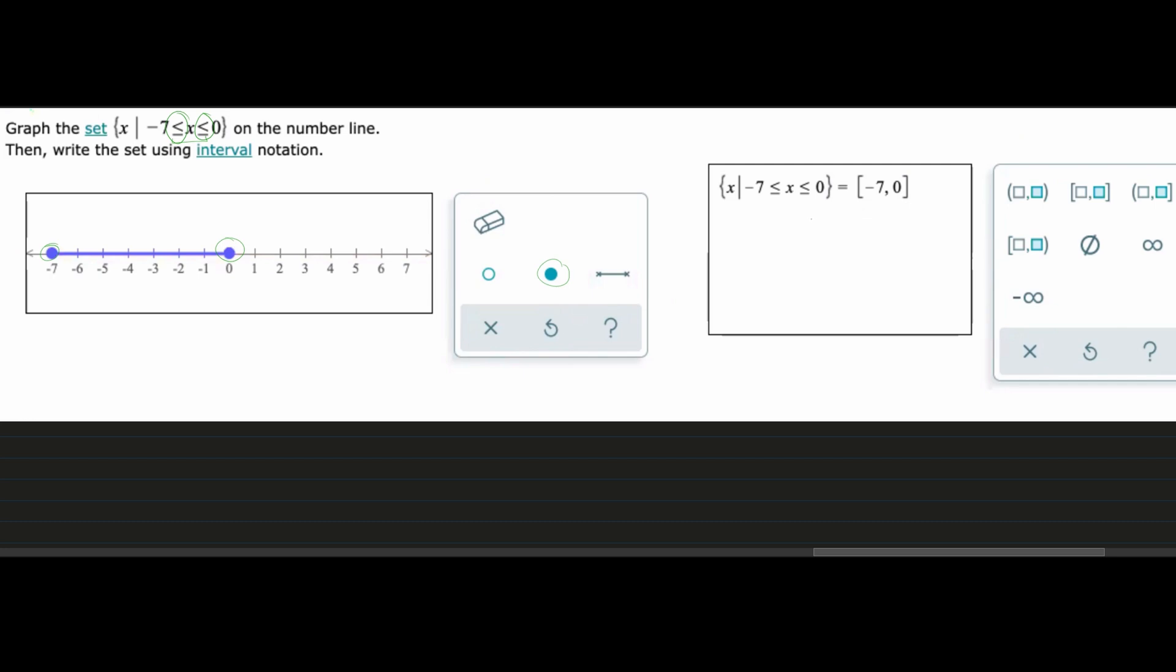We know we go from smallest to largest left to right. So our smallest thing here is this negative 7 and our largest is 0. And that's how we would write using the interval notation as well as the graph to the left.